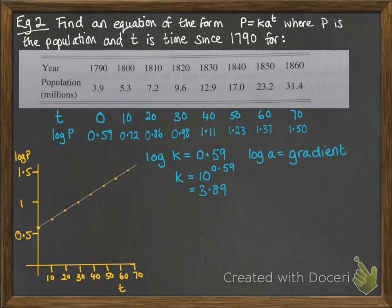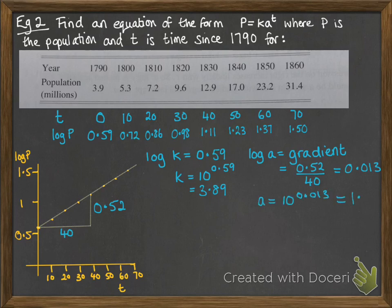Log a is the gradient. From our graph here we work out our gradient. We can take exact values from our table of values. That particular one I've picked out has an x change of 40 and a y change of 0.52. So that gives us a gradient of 0.013 which means a will be 10 to the 0.013 which is 1.03. Now pop that back into our equation and we get P equals 3.89 times 1.03 to the power of t.